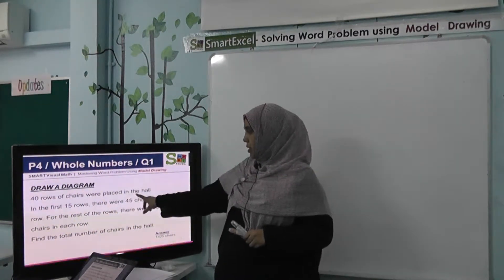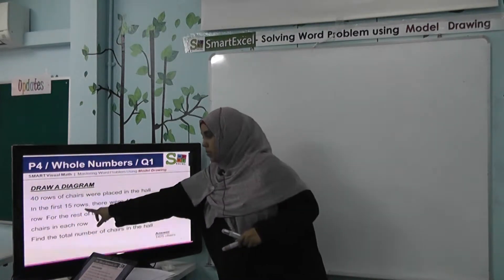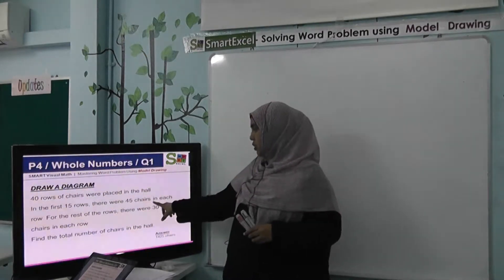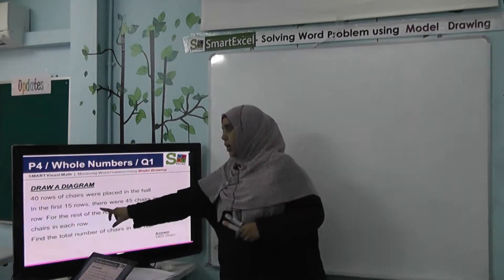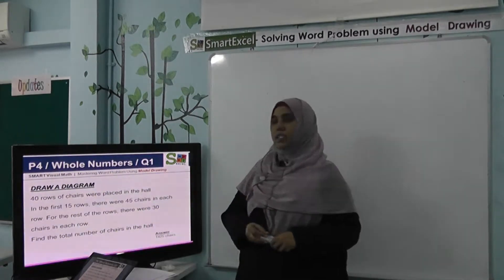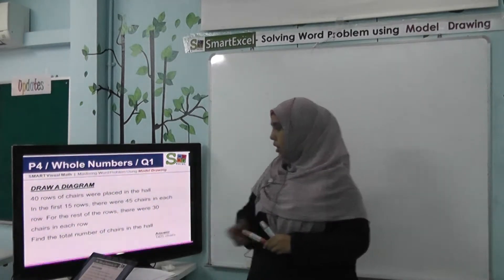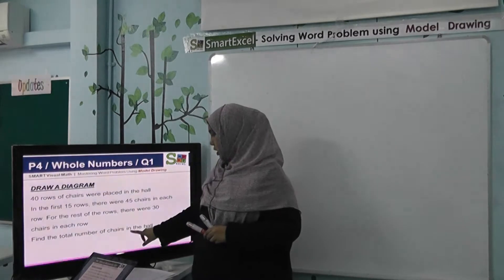40 rows of chairs were placed in a hall. In the first 15 rows, there were 45 chairs in each row. For the rest of the rows, there were 30 chairs in each row. Find the total number of chairs in the hall.